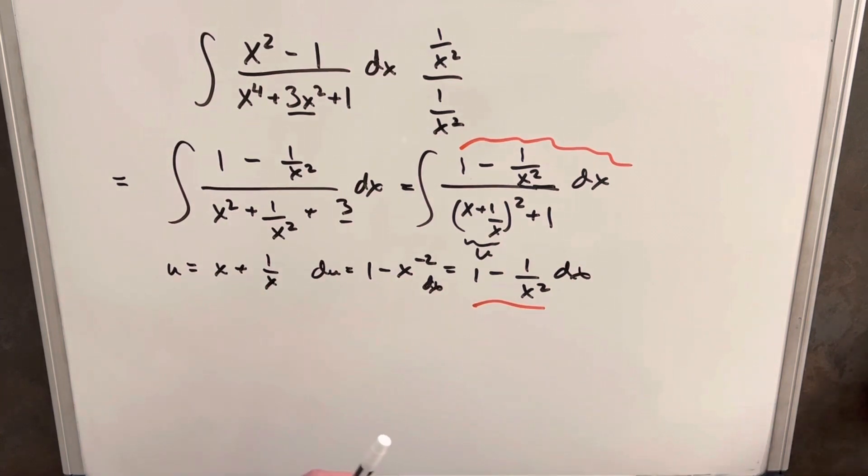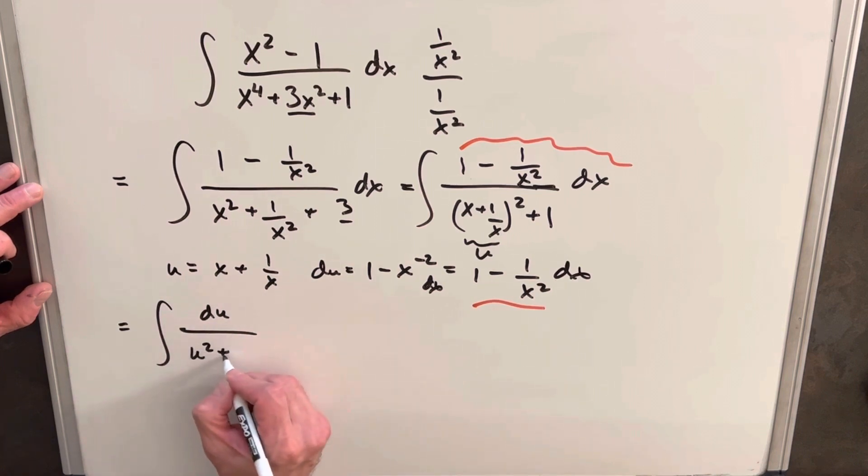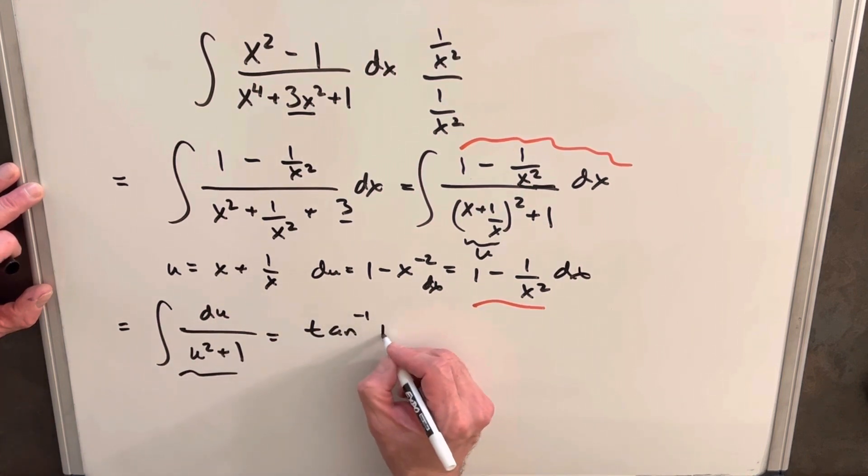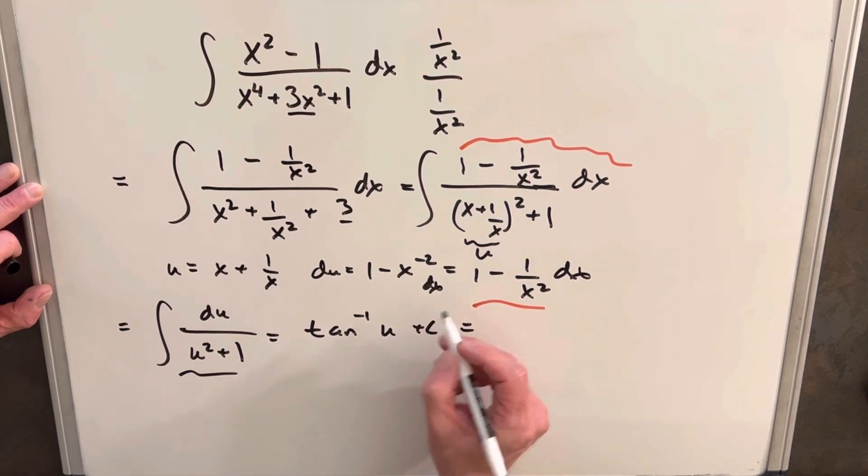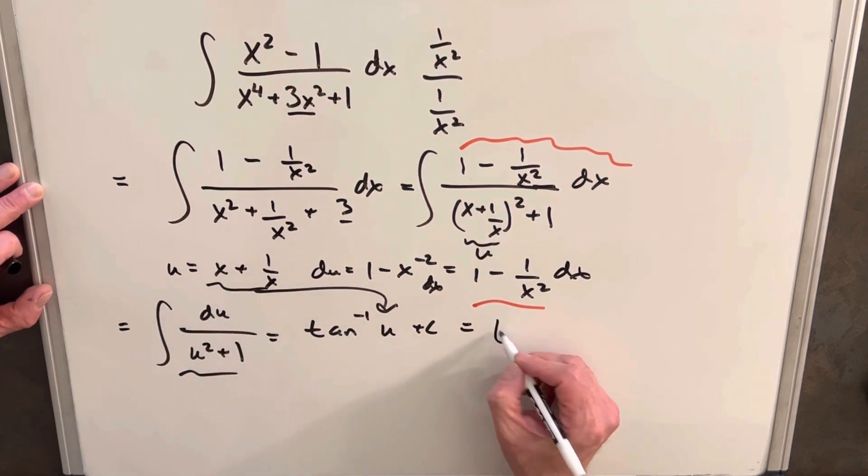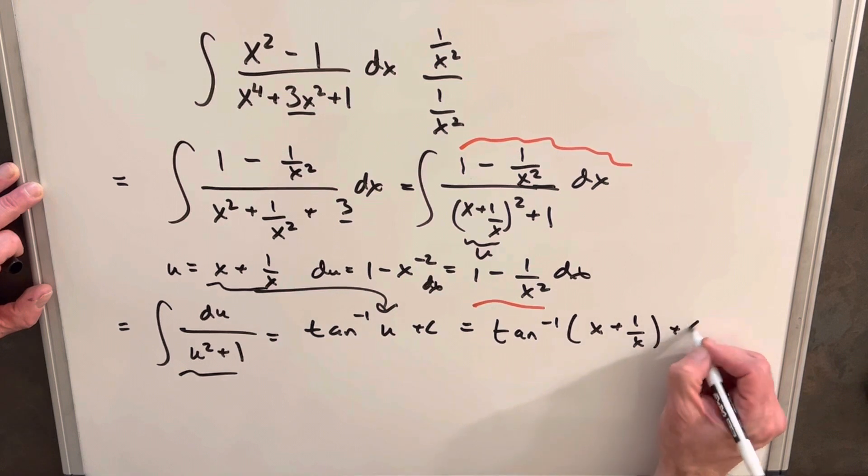So when we do this u substitution, it's going to come up pretty nice, we're going to have just du over u squared plus 1. And we know this integral is just arctan, so we're going to get back inverse tangent of u plus c, and then we'll just back substitute here. So for our answer, we're going to have tan inverse x plus 1 over x plus c.